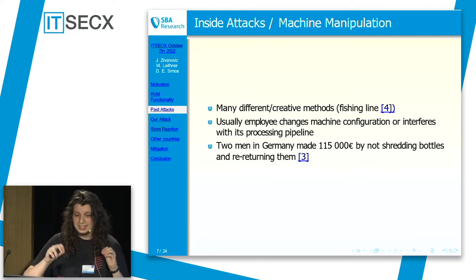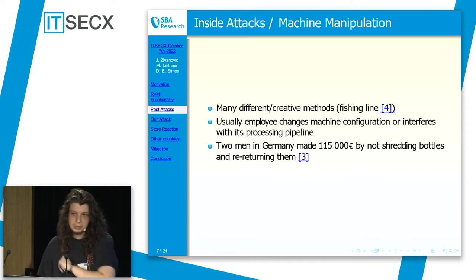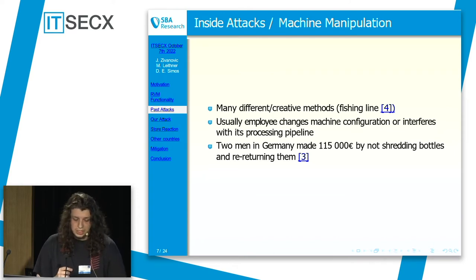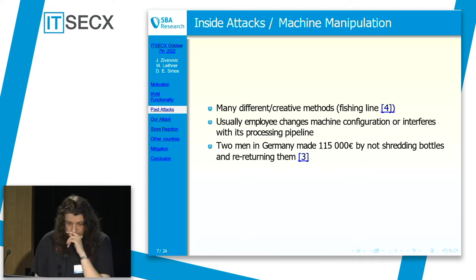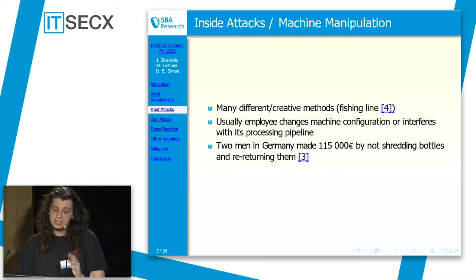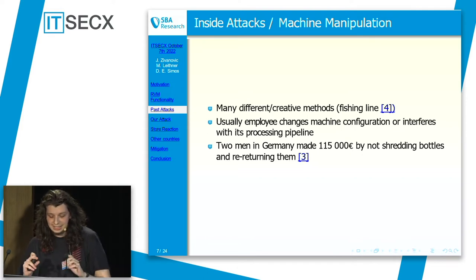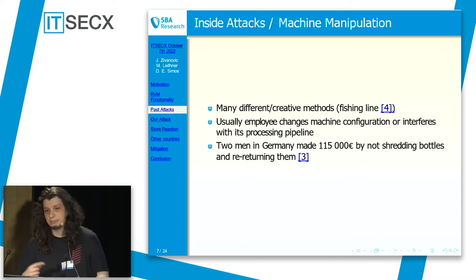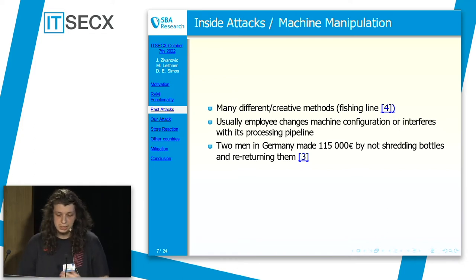Usually in this category of attacks, it's employees that change the configuration of a machine or manipulate its pipeline. When you return a plastic bottle, for example, they usually get shredded — first to prevent you from reusing that bottle and resubmitting it, and second to have more space. However, there was an article where two men in Germany made over 100,000 euros by simply disabling the shredding feature of the machine, letting bottles accumulate, and then using them two to three times again.